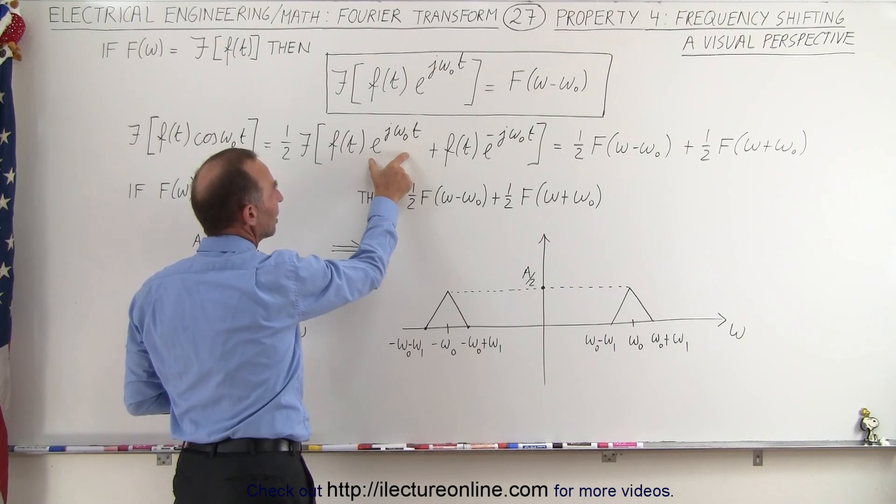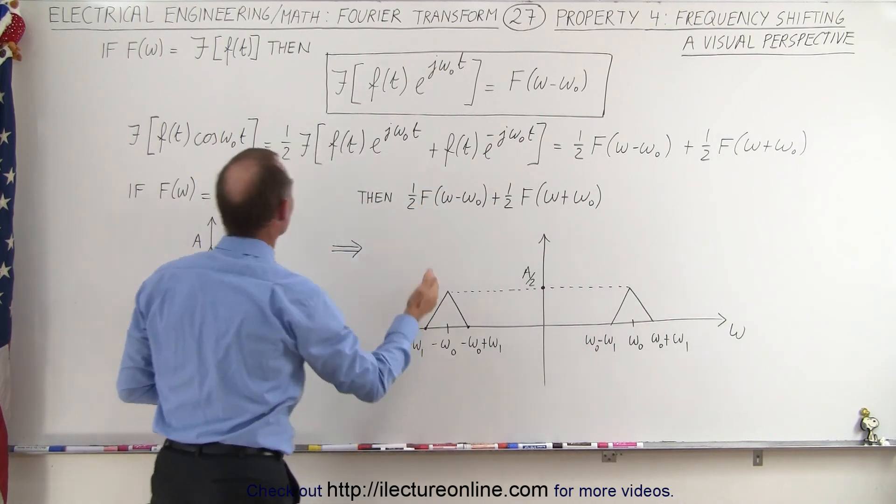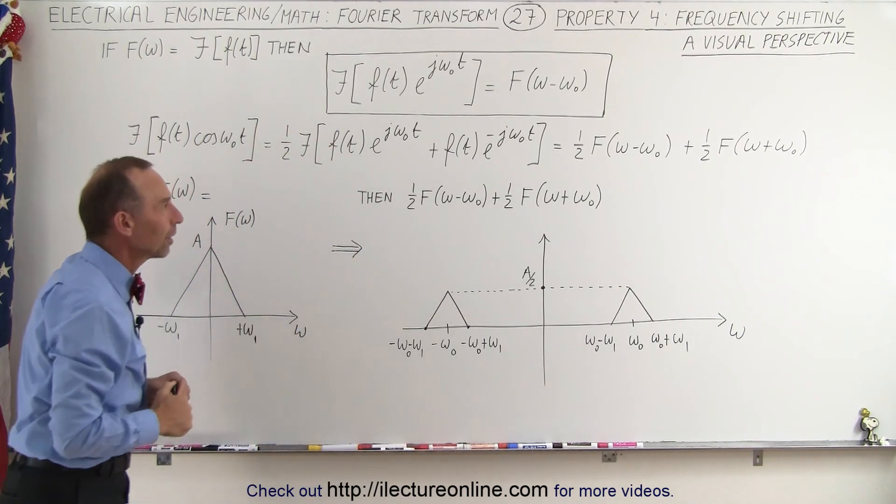f of t multiplied times e to the j omega t, and f of t multiplied times e to the minus j omega t. And of course we have reduction in the amplitude, so we have to multiply the whole thing by one half.